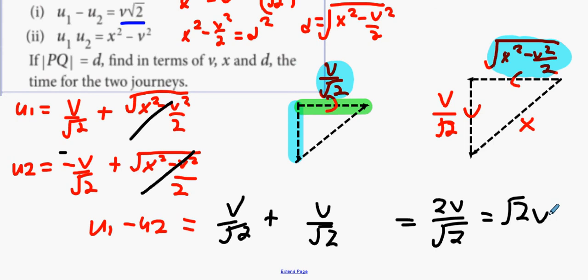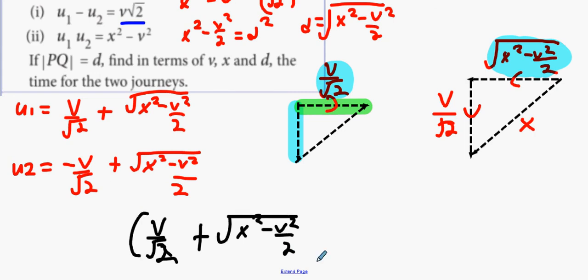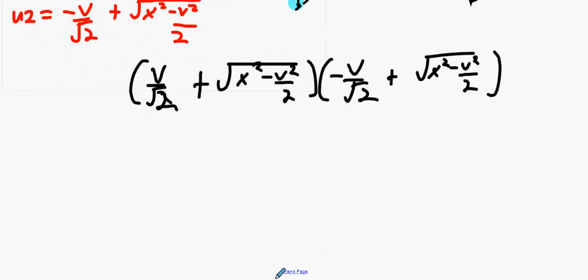Prove that U1 multiplied by U2 is x squared minus V squared. I'm just going to multiply them both by each other. Let's multiply the two answers by each other. So it's going to be V over root 2 plus square root of x squared minus V squared over 2, multiply by minus V over root 2 plus root x squared minus V squared all over 2. Let's multiply this out. Is there any point multiplying out the middle part? It's going to be the difference of two squares. So there's no point me wasting time multiplying out the middle part when I don't have to.